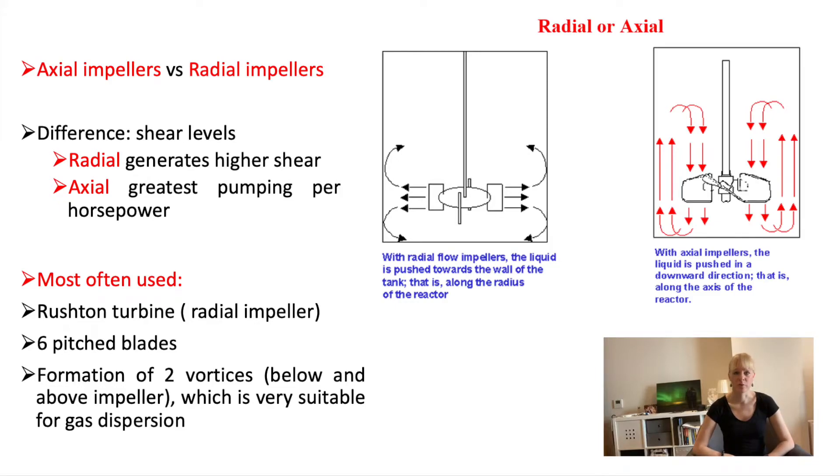And your typical radial impeller would be the Rushton turbine. So the Rushton turbine has its six pitch blades. And these ones are quite often used in bioreactors.